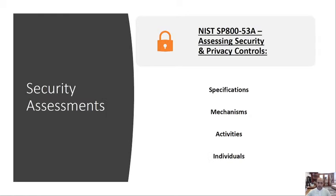NIST Special Publication 800-53A is very important for understanding security assessment. It provides definitions for specifications, mechanisms, activities, and individuals. It also contains a list of security and privacy controls and guidance on assessing the effectiveness of those controls. If you are in the field of security assessment, go in depth; otherwise, just have an overview.